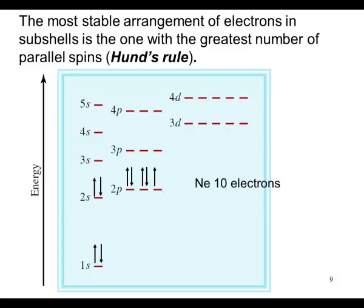And neon, ten electrons, which will complete the p orbital. 1s2, 2s2, 2p6.